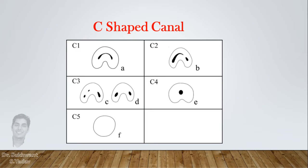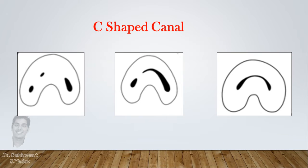But when roots are fused, the orifice appears in one of five shapes. There can be three different canals in a C-shape fashion, or two canals where the distal canal appears joined with either the mesiobuccal or mesiolingual canal. And if all canals are fused, then a single C-shaped canal will be visible.